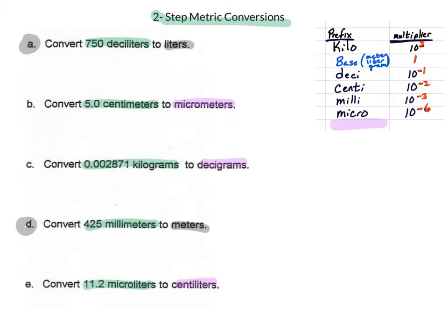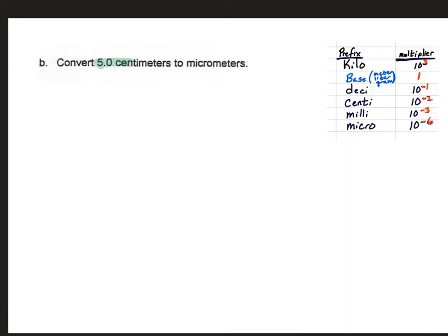Let's start with letter B. We're going to start with our 5 centimeters — that's what we already know — and we're going to end up with micrometers. Next, we're going to look at the relationship between what we're starting with, centimeters, and the base unit, which in this case will be meters. And we're going to write our relationship between the base unit and the micrometers. As we did in the one-step method, we start with the thing that we know: the 5 centimeters.